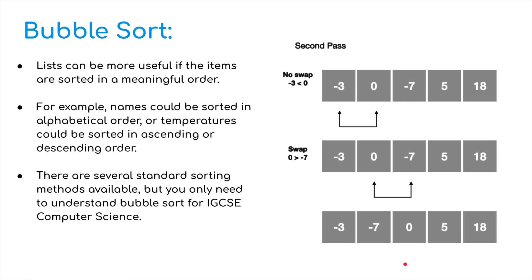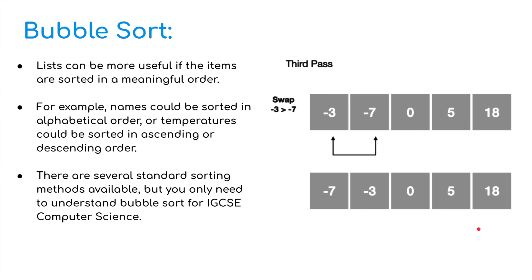So we do a second pass. We compare minus 3 and 0. No swap. And carry on. 0 and minus 7. Well, there's a swap there. And the rest remain the same. And then finally on the third pass, we swap around minus 3 and minus 7. And we have a little look. And there, we have got all the numbers in ascending order. Starting with minus 7, going up to 18. So that basically is bubble sort. And later on, we will be learning how to do that in both pseudocode and how to write it as an actual program. So we can sort through a potential list of information and put it into the correct order.